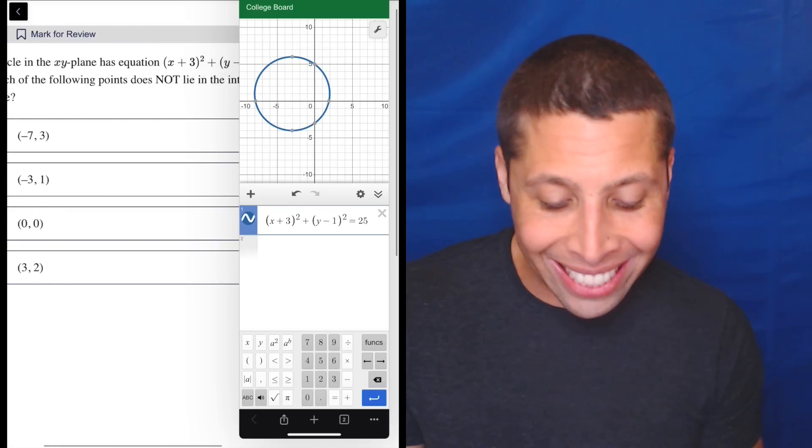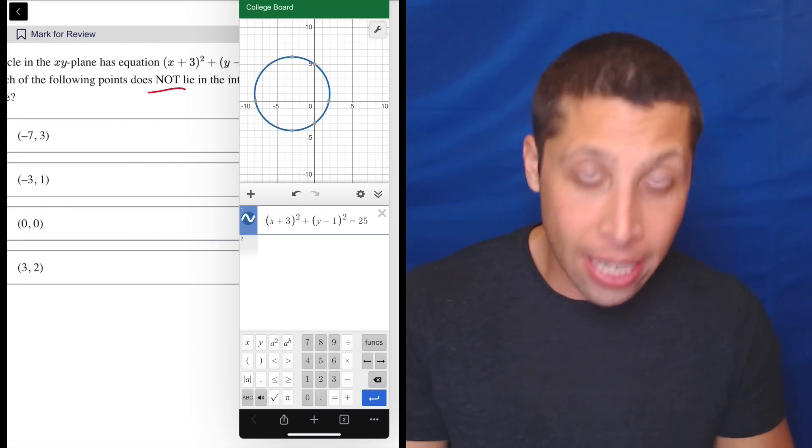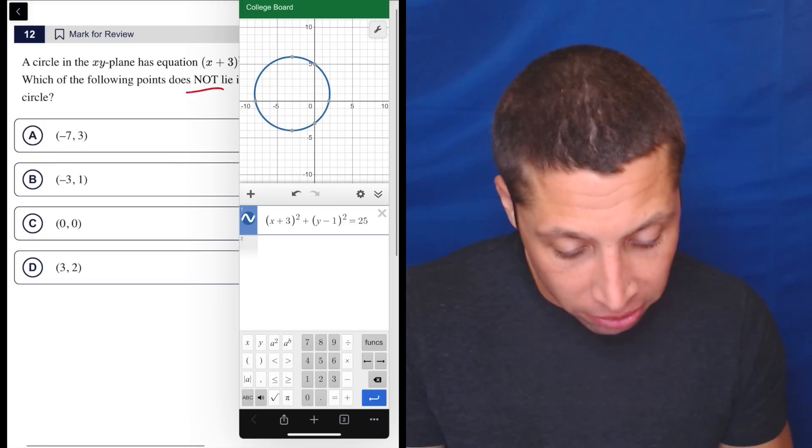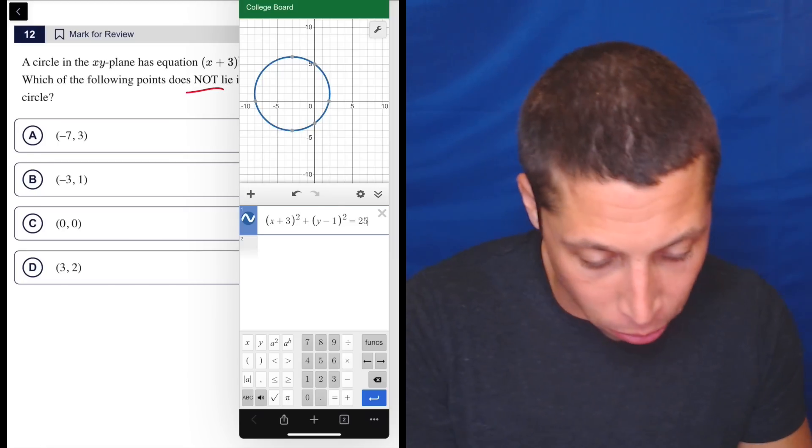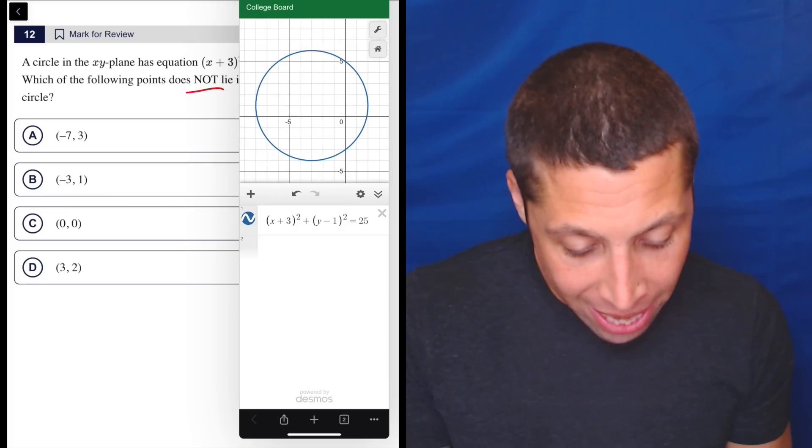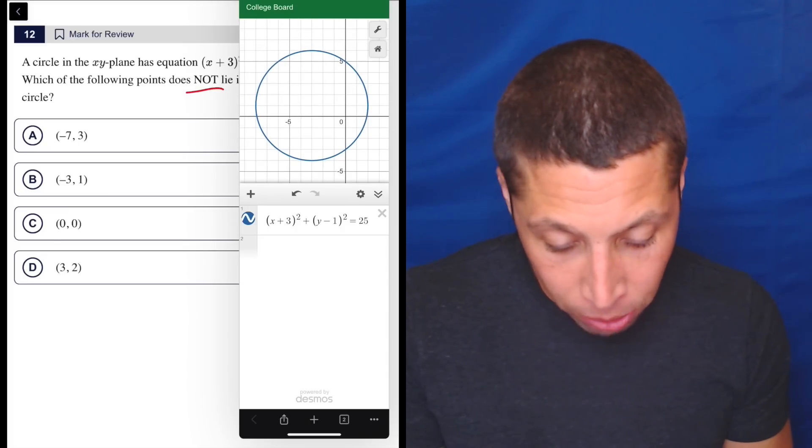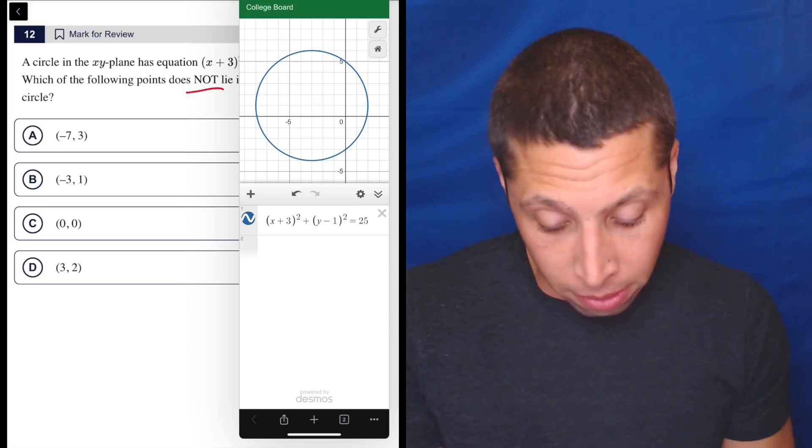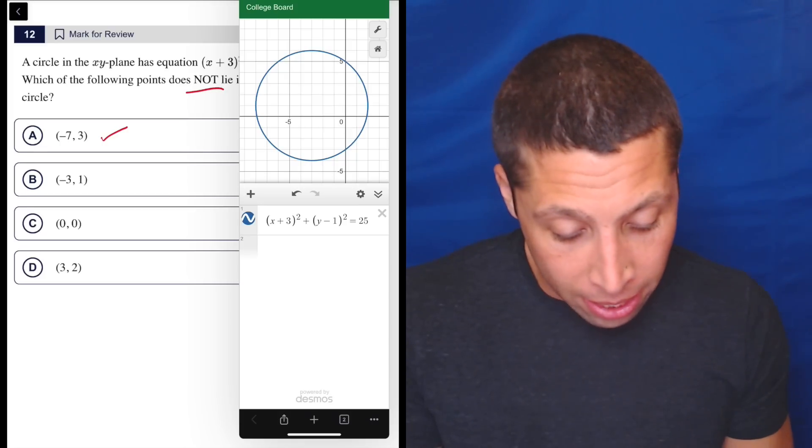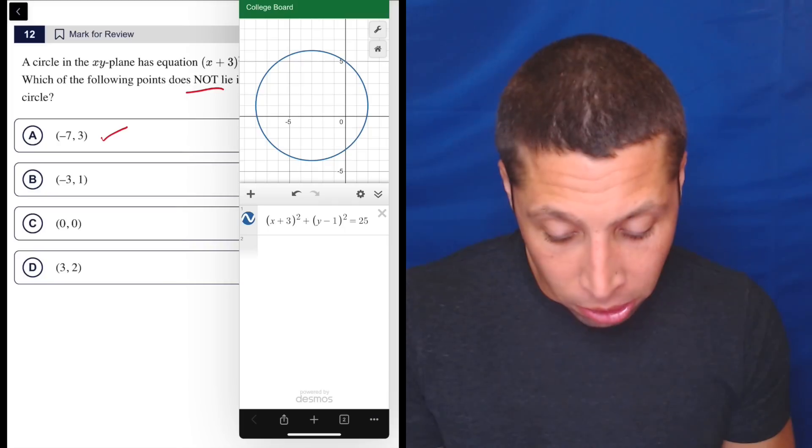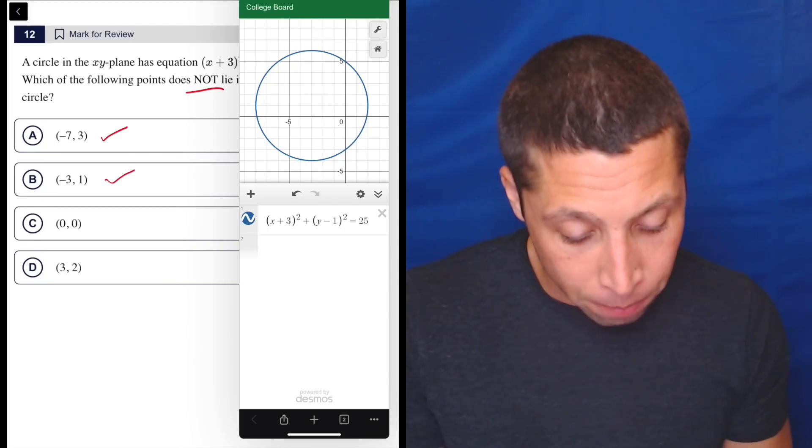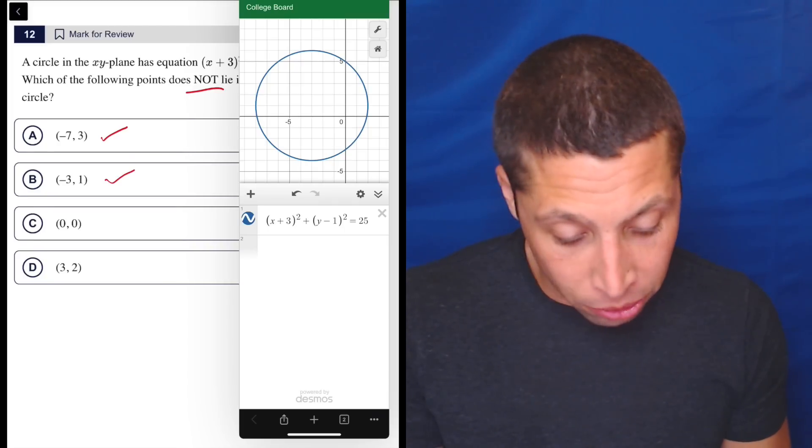Then we need to find the point that does not lie in the circle. So some of them you're just going to be able to see, right? I'm going to kind of treat this just like a normal graph if I zoom in here. So negative 7, 3 looks like it's in there. So that seems good. Negative 3, 1 also seems like it's in there. Just kind of looking at it. 0, 0 in there for sure.